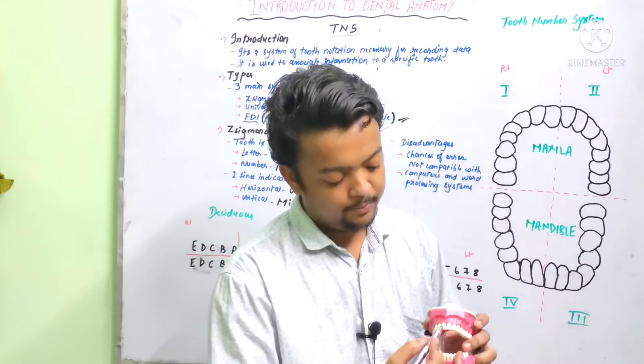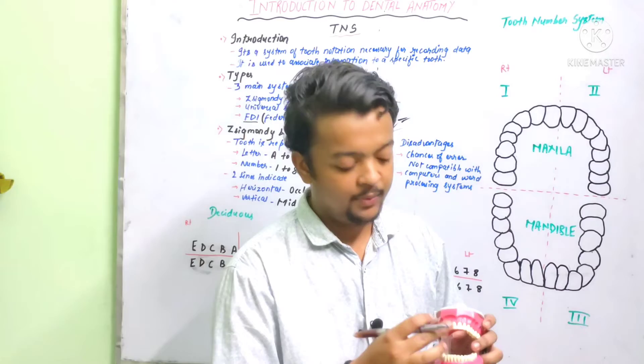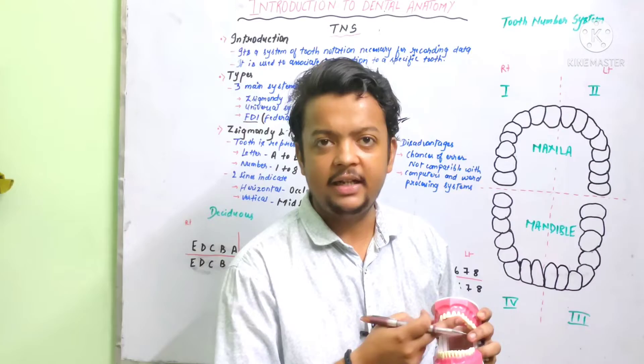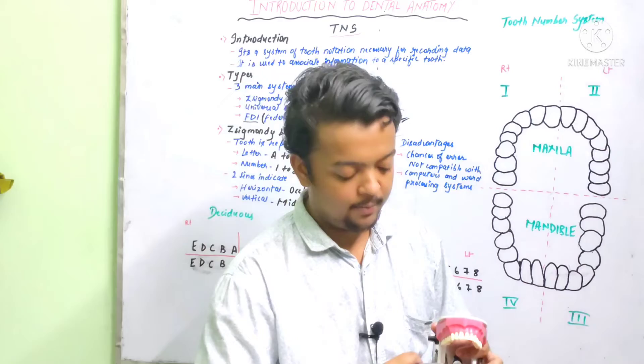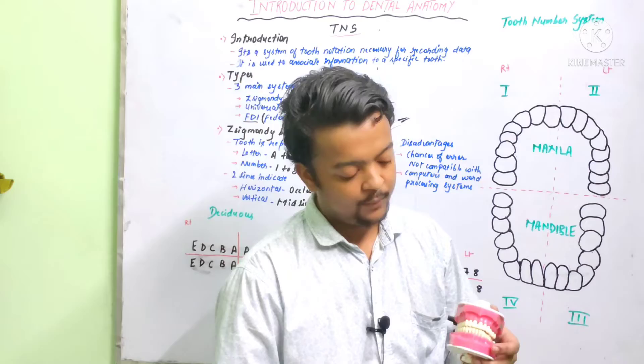For the upper incisor, we have the mesial surface towards the midline, distal surface away from the midline, labial surface towards the lip, and the lingual surface towards the tongue. And one more is the incisal surface — that is the biting edge of the incisors. For the molars in the lower, we have mesial, distal, buccal, lingual, and the upper surface is the occlusal surface.